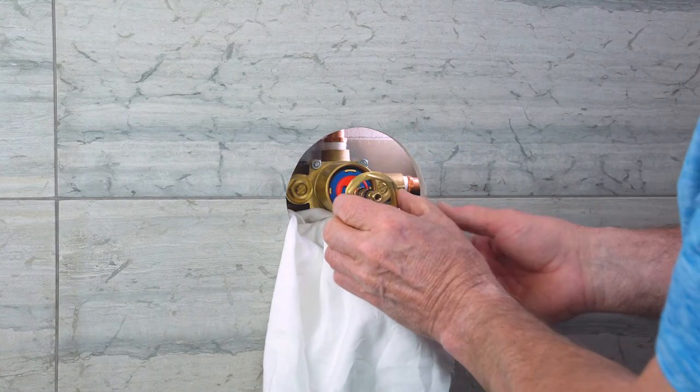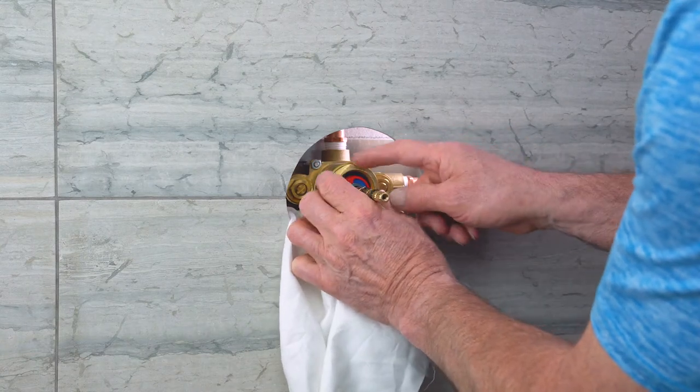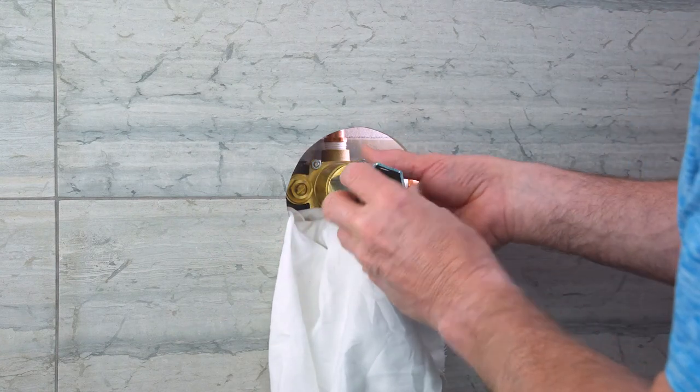Screw the cartridge nut back on and tighten it firmly with a 1-7-16th plumber socket.